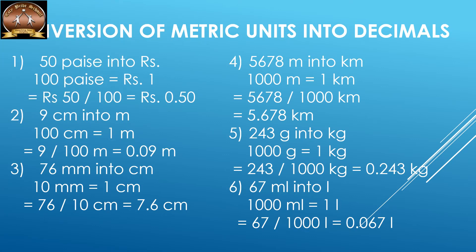Here is a conversion of metric units into decimals. The first one: we have to convert 50 paise into rupees. The conversion is 100 paise equals 1 rupee. We are converting a smaller unit to a bigger unit — paise is smaller than rupees — so we will divide by 100. So 50 paise is equal to rupees 0.50.